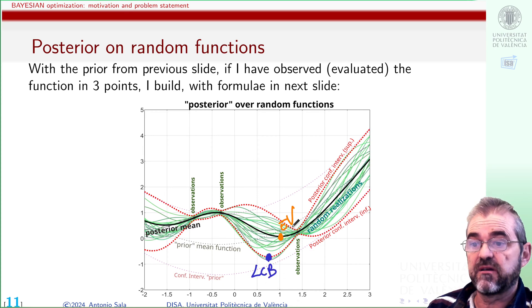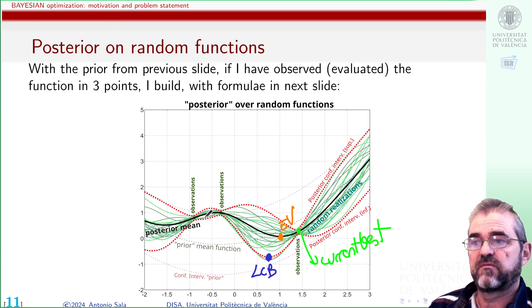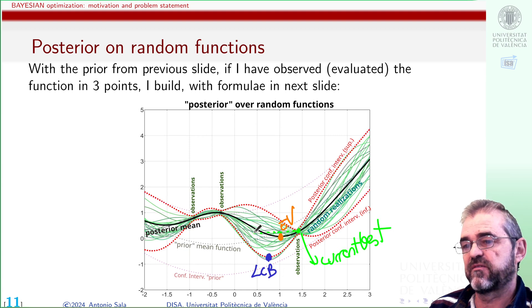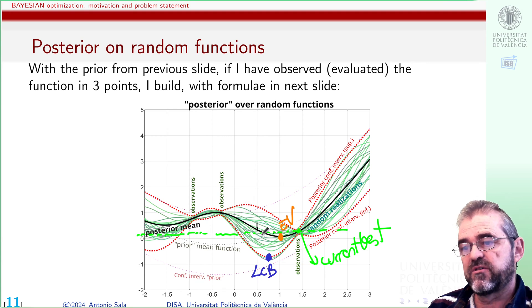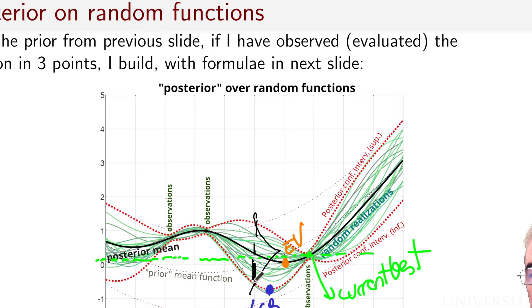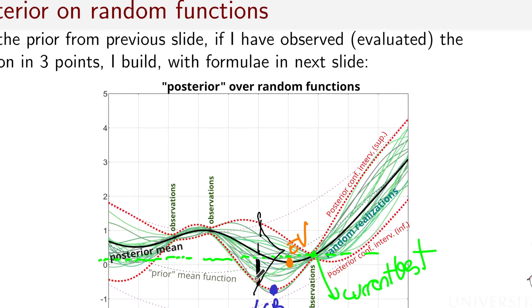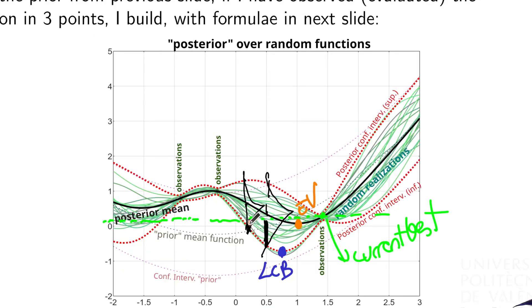We can think on computing for each x point the so-called probability of improvement. This is my current best, the minimum of the observations. If I draw a horizontal line, for instance, at this point, we have the Gaussian curve. The integral of the Gaussian in here will be the probability of improvement, higher probability of improving than the point in here in which this part of the Gaussian is much smaller. This is the probability of improvement heuristics.